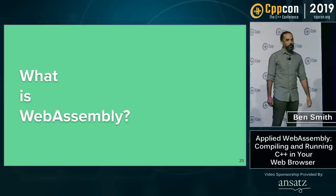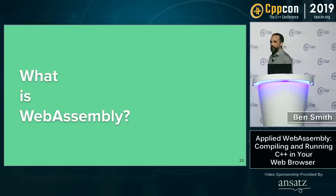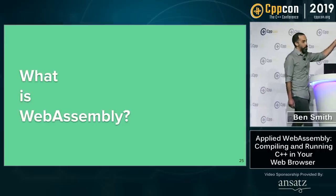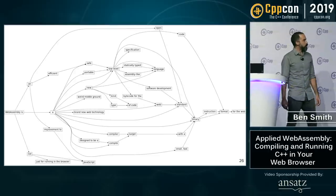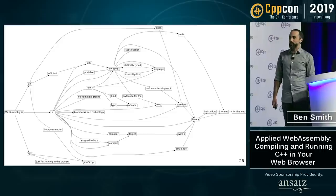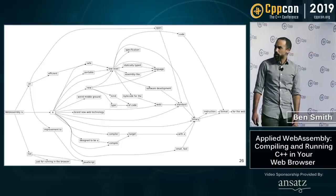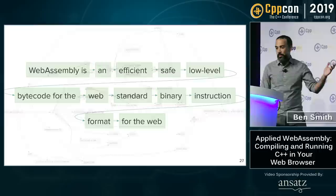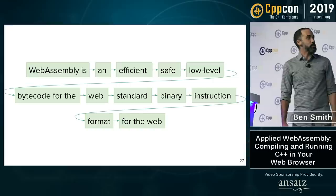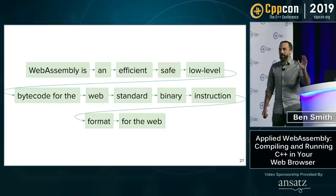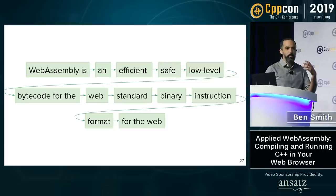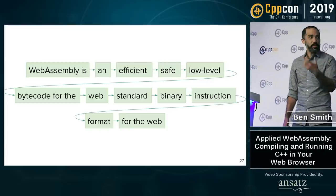So what is WebAssembly? I took a quick search of the top hits and made a word graph. You can probably find what I think is the best definition: WebAssembly is an efficient, safe, low-level bytecode — a standard binary instruction format for the web. WebAssembly is really all of these things: it's about being low level, it's about being a VM, it's about being a binary format. But it's a lot more than that.